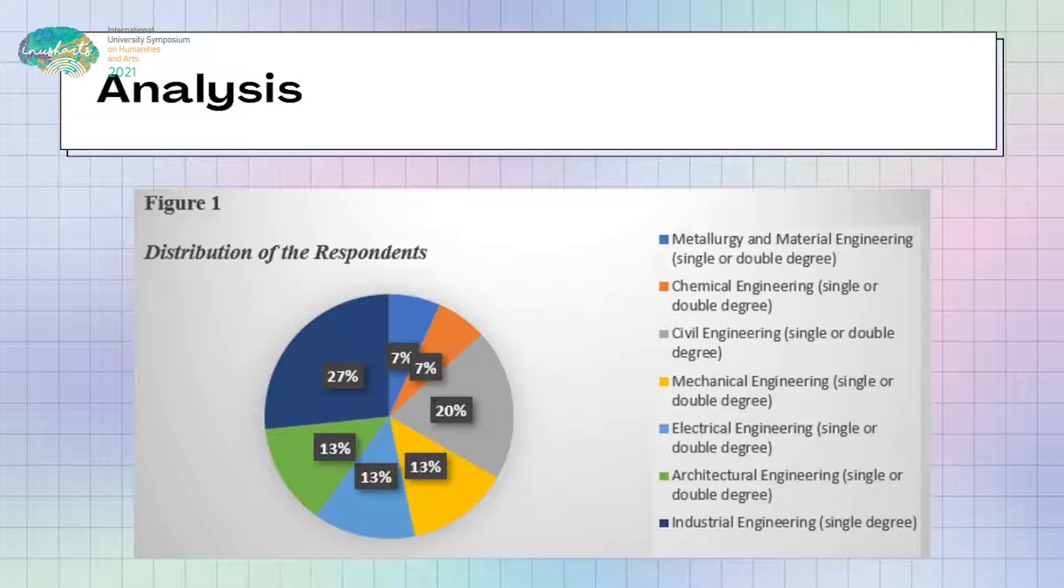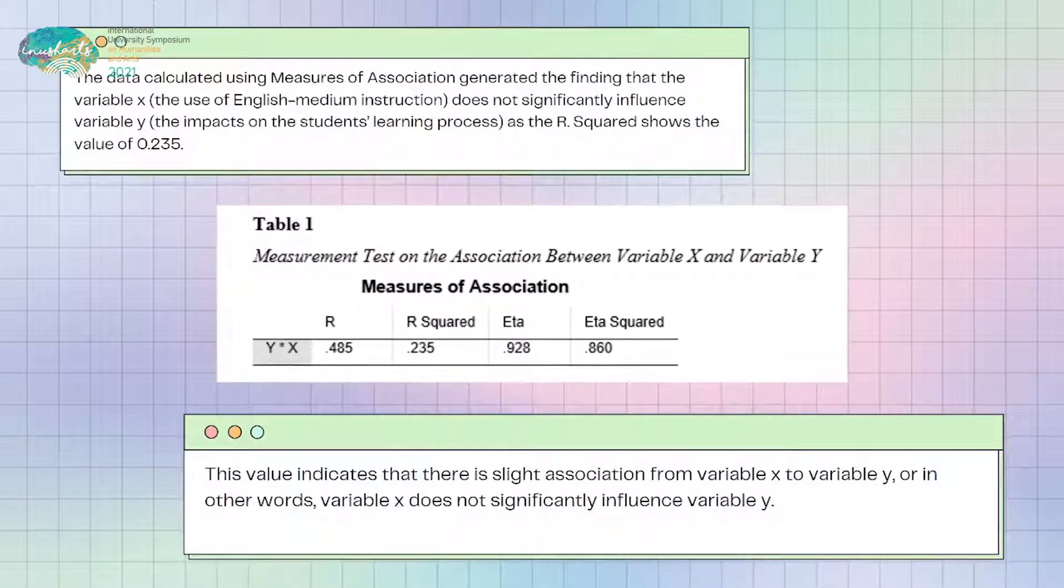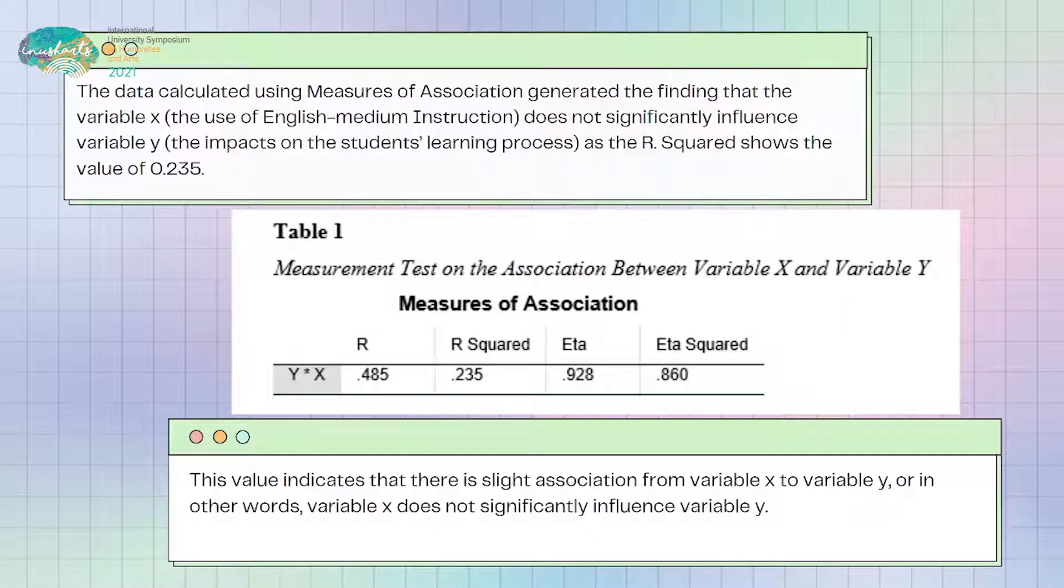The data calculated using measures of association generated the finding that can be seen in table 1. The result shows that the value of the R squared is quite low with the number of 0.235. This value indicates that there is slight association from variable X to variable Y or in other words, variable X does not significantly influence variable Y.